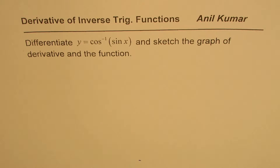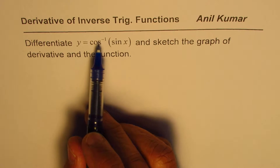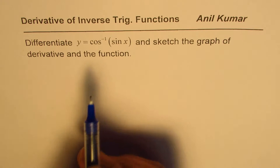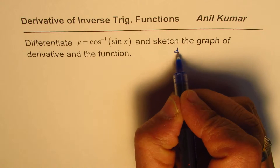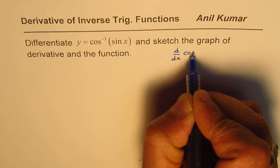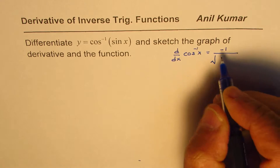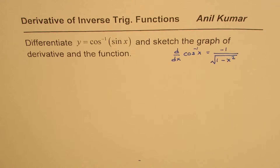I'm Anil Kumar and in this video we'll find the derivative and sketch the graph. The question is: differentiate y equals cos inverse of sine x and sketch the graph of the derivative and the function. What you need to know is the derivative of cos inverse x. The formula is: d/dx of cos inverse x equals minus 1 over square root of 1 minus x squared. You can pause the video, answer the question, and then look into my suggestions.